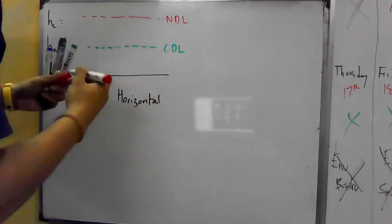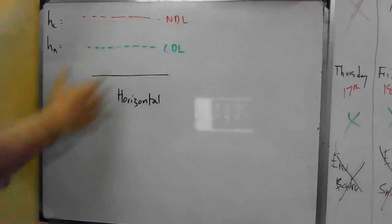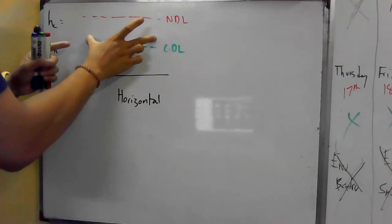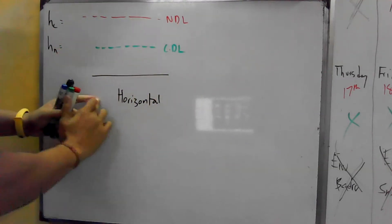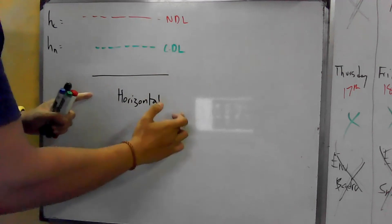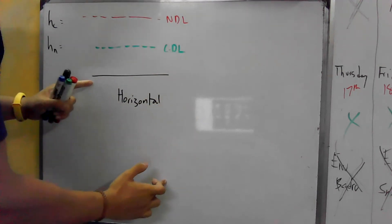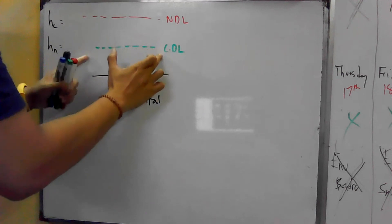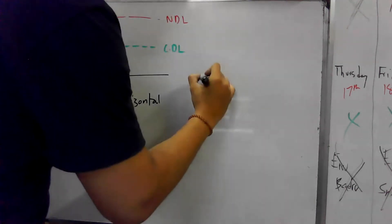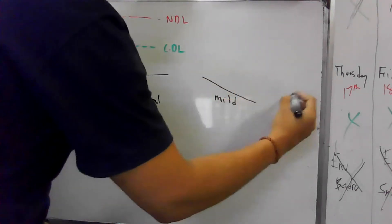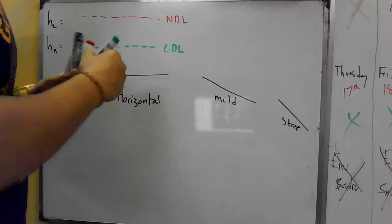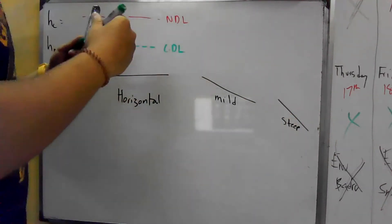One degree, two degree. If you visually boost this NDL line, I will tell you — it is exactly critical. The CDL and NDL are the same for the critical slope condition. The NDL coincides exactly with the CDL.